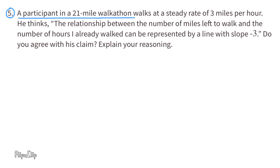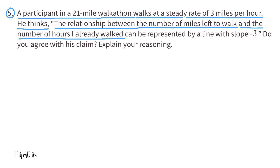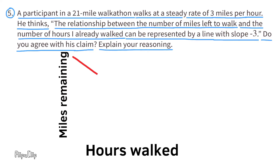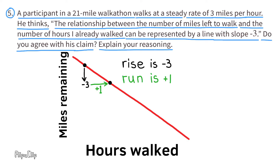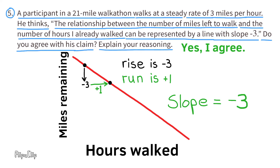Number 5. A participant in a 21-mile walkathon walks at a steady rate of 3 miles per hour. He thinks the relationship between the number of miles left to walk and the number of hours already walked can be represented by a line with a slope of negative 3. This represents a graph with hours walked on the x-axis and miles remaining on the y-axis. The number of miles remaining decreases as hours walked increases. The rise is negative 3 and the run is positive 1, so the slope is negative 3. Yes, I agree.